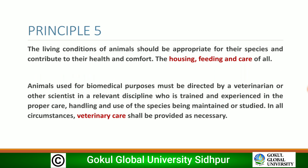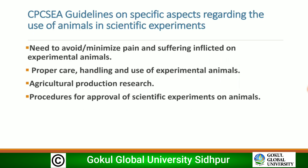Principle 5: The living conditions of animals should be appropriate for their species and contribute to their health and comfort. The housing, feeding, and care of all animals must be given due importance. Use of animals for biomedical purposes must be directed by a veterinarian or other scientist trained and experienced in the proper care, handling, and use of the species being used, and veterinary care should be provided as necessary.